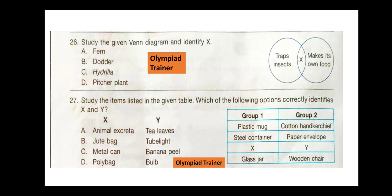Question 26. Study the given Venn diagram and identify X. X should be something that traps insects and also makes its own food. The correct answer is option D — pitcher plant.